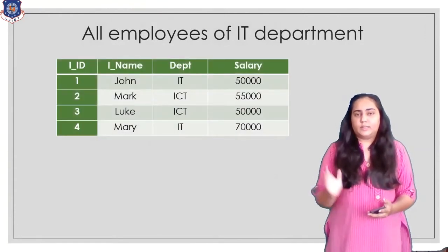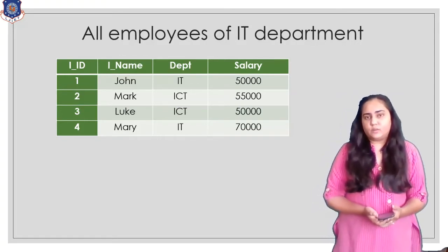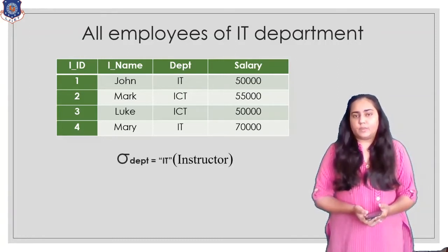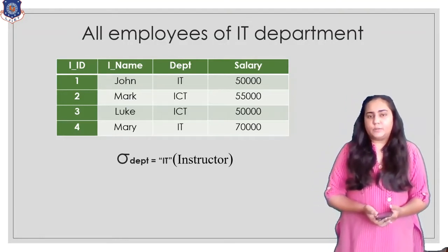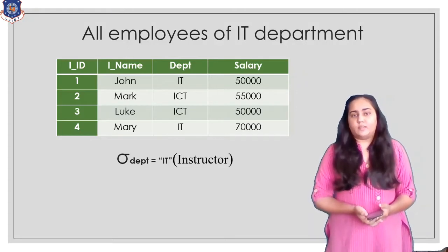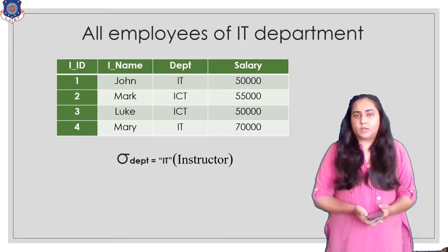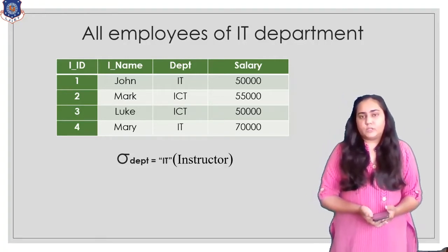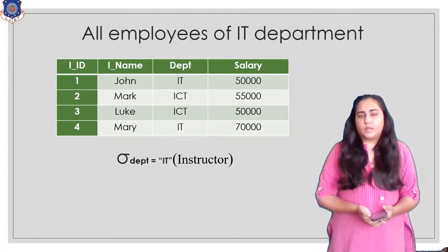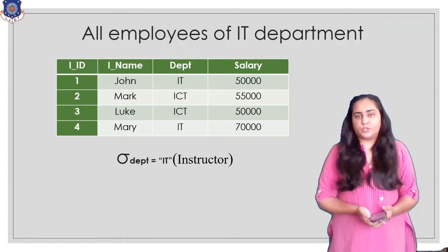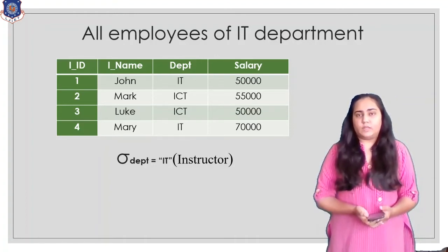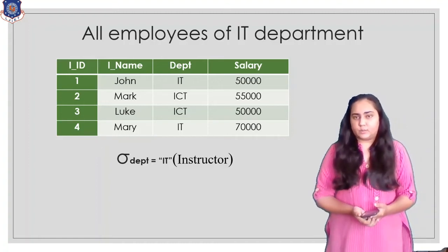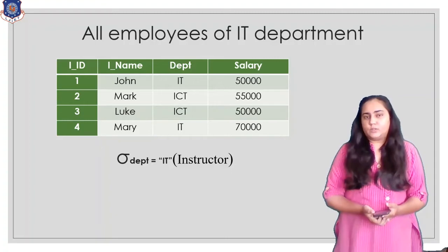Here is the instructor table, and I want to get all the employees working in the IT department. I can write this query simply by using sigma — the symbol for select. I write sigma with the condition dept equals IT in the subscript, and then pass the table name instructor in brackets. This query will return all instructors from the IT department.